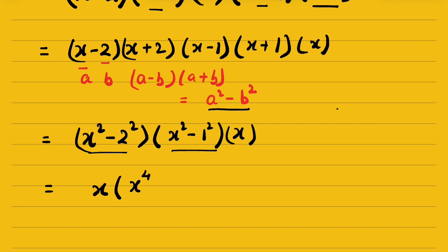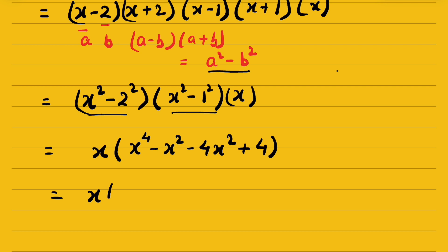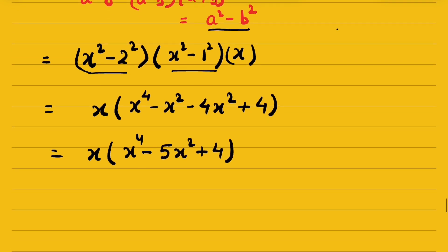Expanding: x squared times x squared is x to the power of 4, x squared times 1 is x squared, minus 4 times x squared is minus 4x squared, and minus 4 times 1 is plus 4. So inside the bracket we get x to the power of 4 minus 5x squared plus 4, then multiply by x.